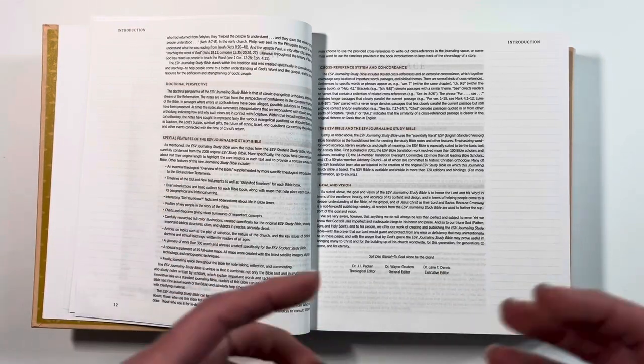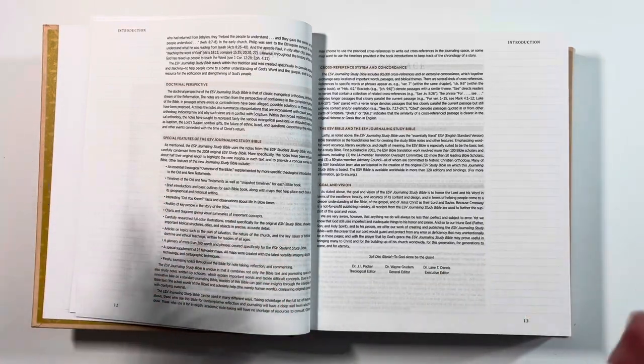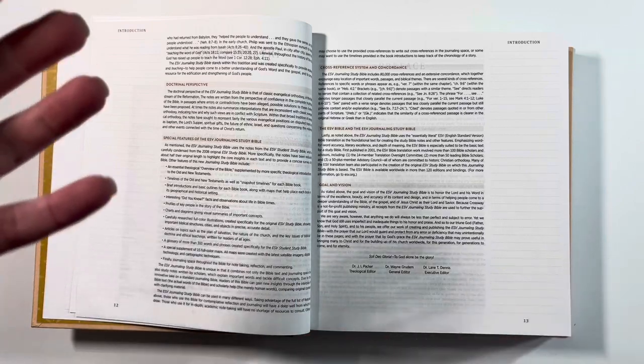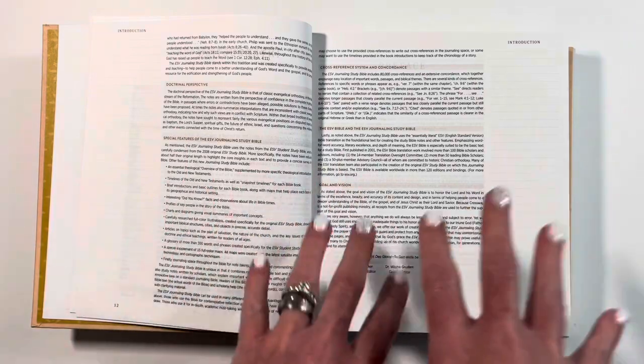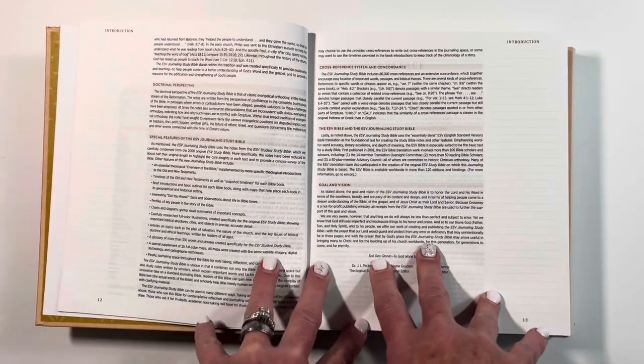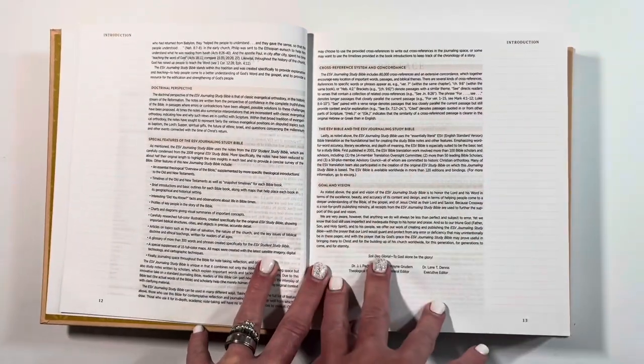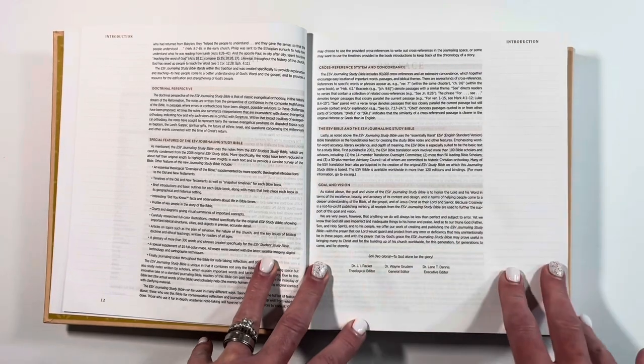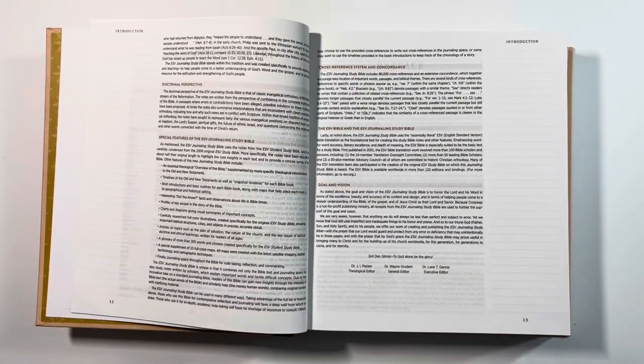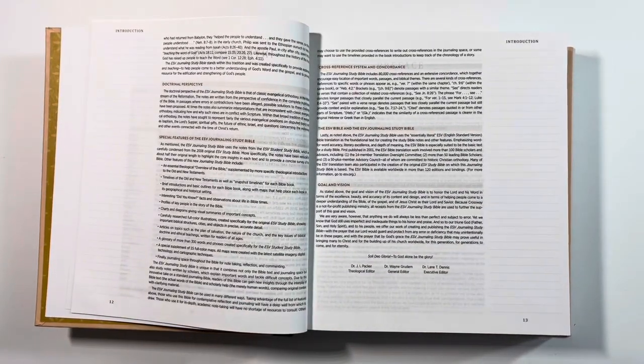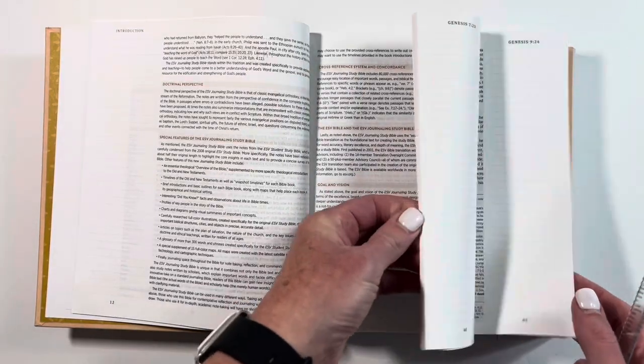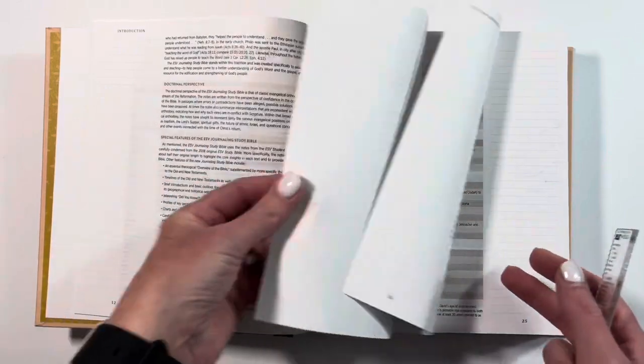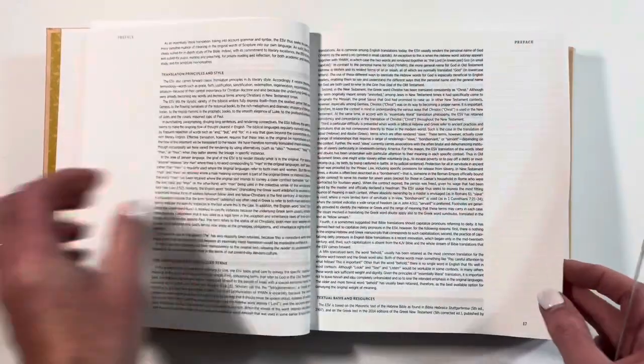So I like that because when I have my journaling Bibles and I am journaling a page I use just a regular journaling Bible, but there is not other information except for the word. So this is going to give you an option to study in addition to your journaling. And let's go ahead and we are just going to measure our margins. They tell us that it is two inch margins so we will check that out. A lot of information here in the beginning.